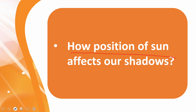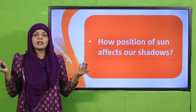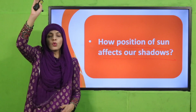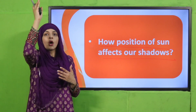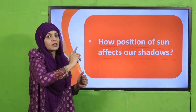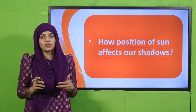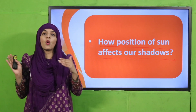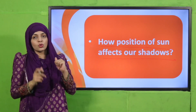The pre-reading question: how does the position of the sun affect our shadows? The sun rises from the east and sets in the west. In the morning it is in the east; around noon it is almost directly above us; and as evening comes, it moves towards the west. Because of this, the shadow's position changes — the shadow always forms on the opposite side of the object from the light source.